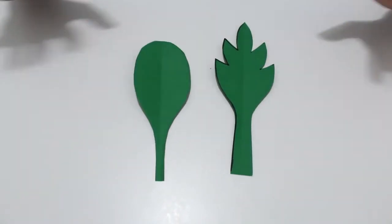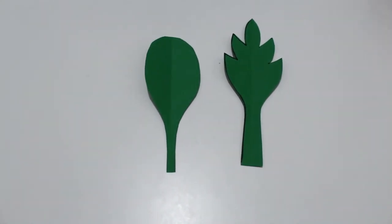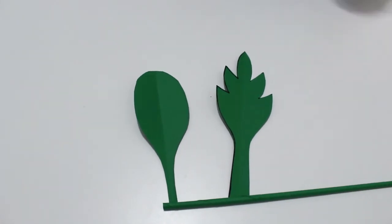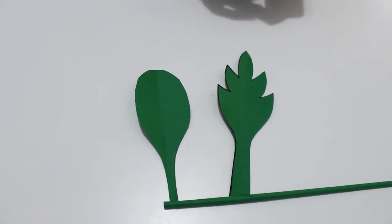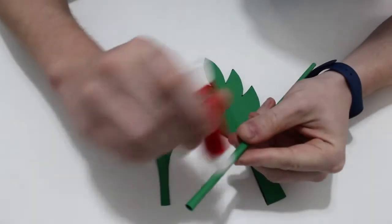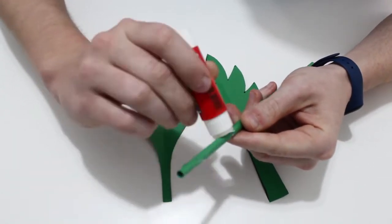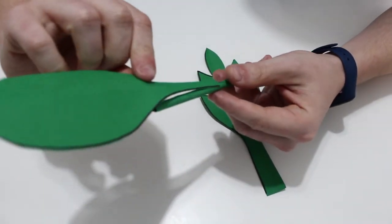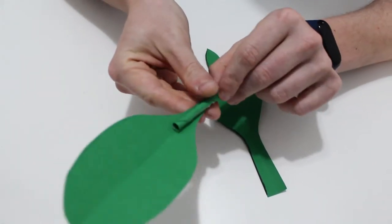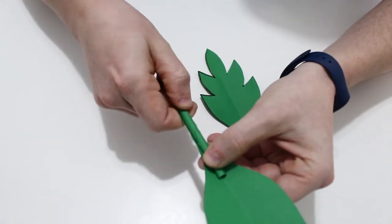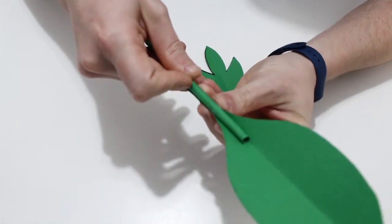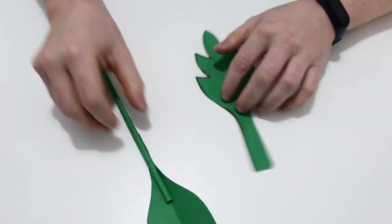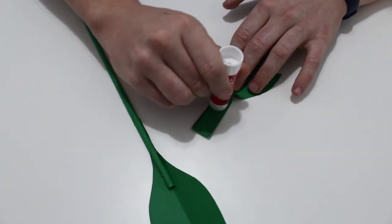Cuando ya tenemos todas las hojas que queramos, vamos a coger el tallo y vamos a ponerle un poco de pegamento en la punta. Lo pegamos así. Y ahora con la otra hoja igual.